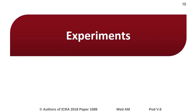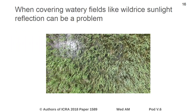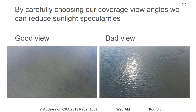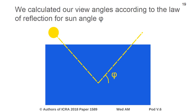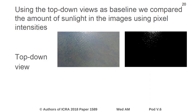We also performed a set of experiments to further motivate this work. When covering watery fields like wild rice, sunlight reflection can be a big problem in the images. By carefully choosing our coverage view angles, we can almost eliminate these sunlight specularities. To demonstrate this, we covered a large lake area with a number of different view angles, calculated according to the law of reflection for the current angle of the Sun.